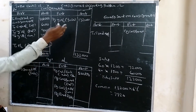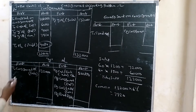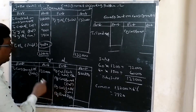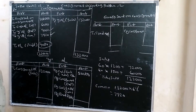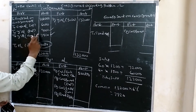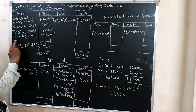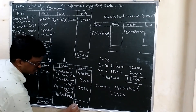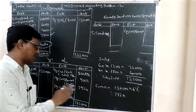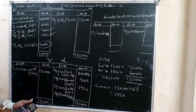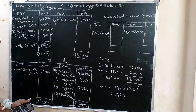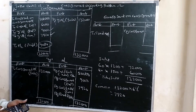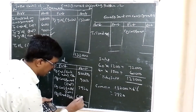Y Account: credit side shows sales 1,32,000 to consignment account. Debit side: advance 50,000, expenses 9,000, commission 7,920. Remaining balance = 1,32,000 minus 50,000 minus 9,000 minus 7,920 = 65,080 rupees payable to X.